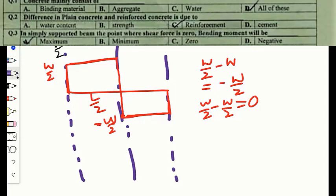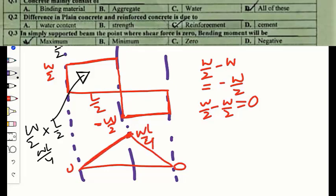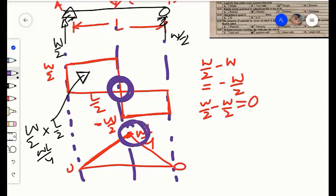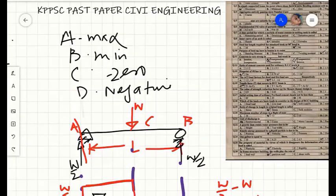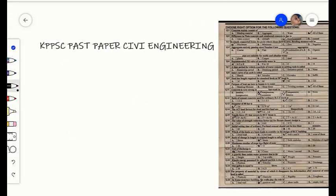At supports A and B the bending moment is zero. The area of the rectangle (W/2 × L/2) gives WL/4. At the mid-point, the bending moment is maximum at WL/4. At this point, the shear force is zero but the bending moment is maximum. Therefore, the correct answer is option A — maximum.